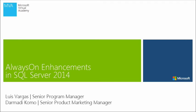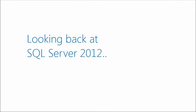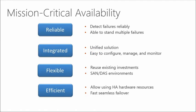Before we do that, can you take us back to SQL Server 2012 and refresh our memory? Absolutely. So looking back at SQL Server 2012, when we started the release and we looked at how to define mission critical availability, we defined four dimensions. We wanted the product to be reliable — we want to detect failures reliably, no false positives, no false negatives. We want to be able to withstand multiple failures, whether in the network, the physical machine, or things like out-of-memory exceptions, even happening in parallel.